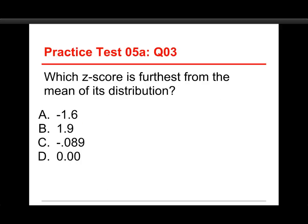Alright, the third one. Which z-score is furthest from the mean of its distribution? The choices are -1.6, 1.9, -0.089, or 0.00?